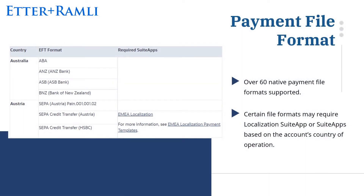The bundle comes with over 60 standard payment file formats, and some of these will require additional Localization Suite apps depending on the account's country of operation. For example, if you're from Austria and you will be using SEPA, a credit transfer template, on top of the Electronic Bank Payment Suite app, you must install the EMEA Localization Suite app on your account.